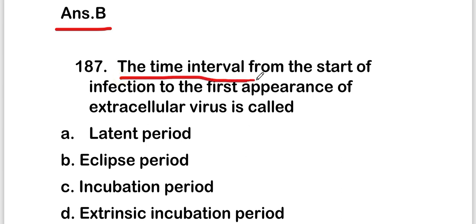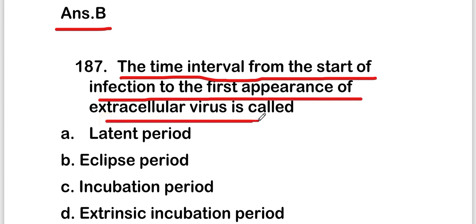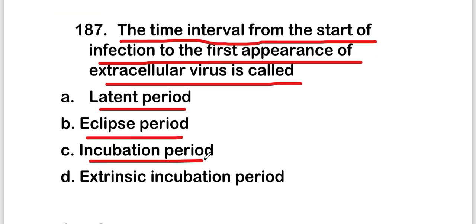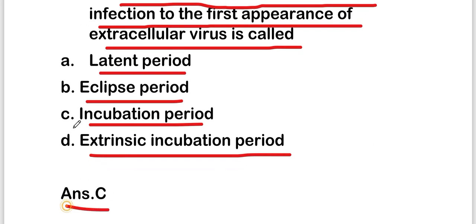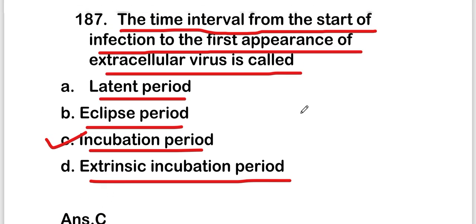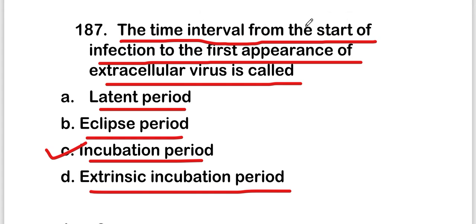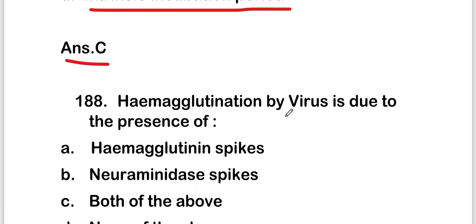The time interval from the start of infection to the first appearance of extracellular virus is called — options are: latent period, eclipse period, incubation period, or extrinsic incubation period. The right answer is option C — incubation period. The incubation period is the time interval from the start of infection to the first appearance of extracellular virus.